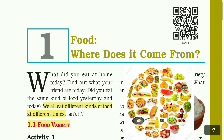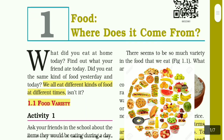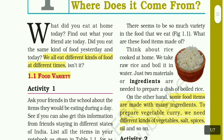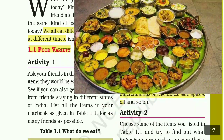Food is what you eat. What is it? Where does it come from? We eat the same kind of food yesterday and today. We all eat different kinds of food at different times. We are eating different foods. Let's move to food variety. Food variety means different, different foods — different varieties.